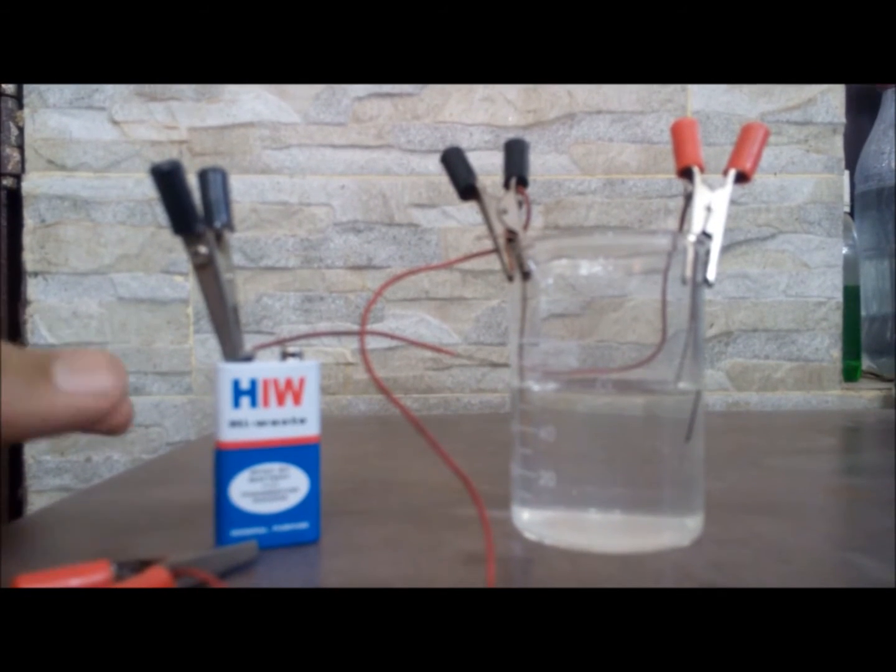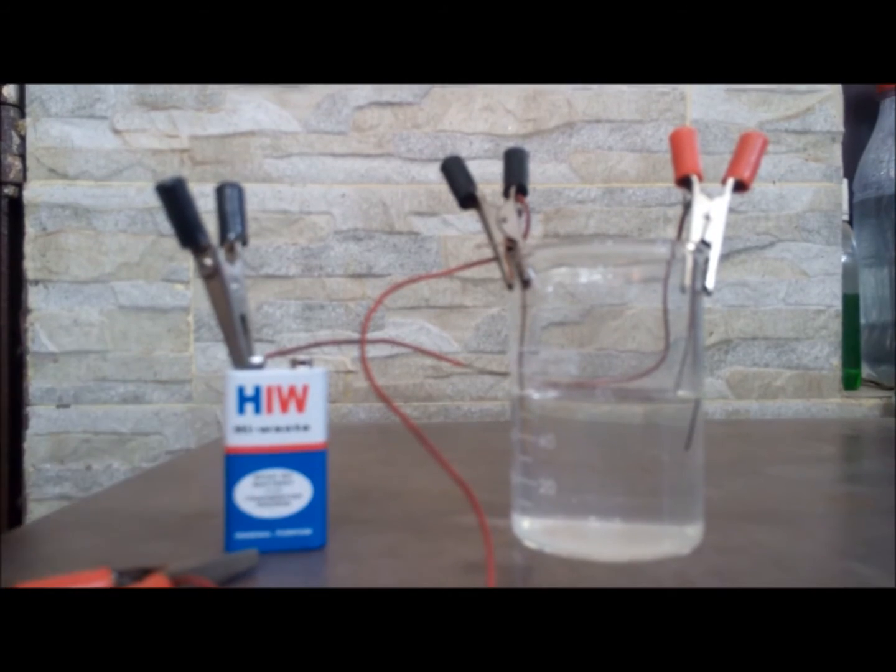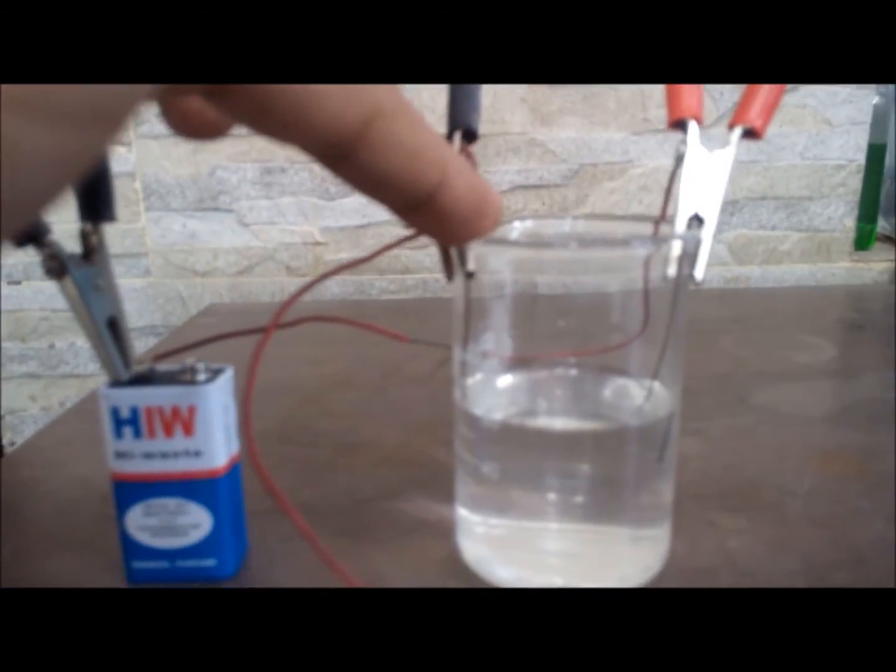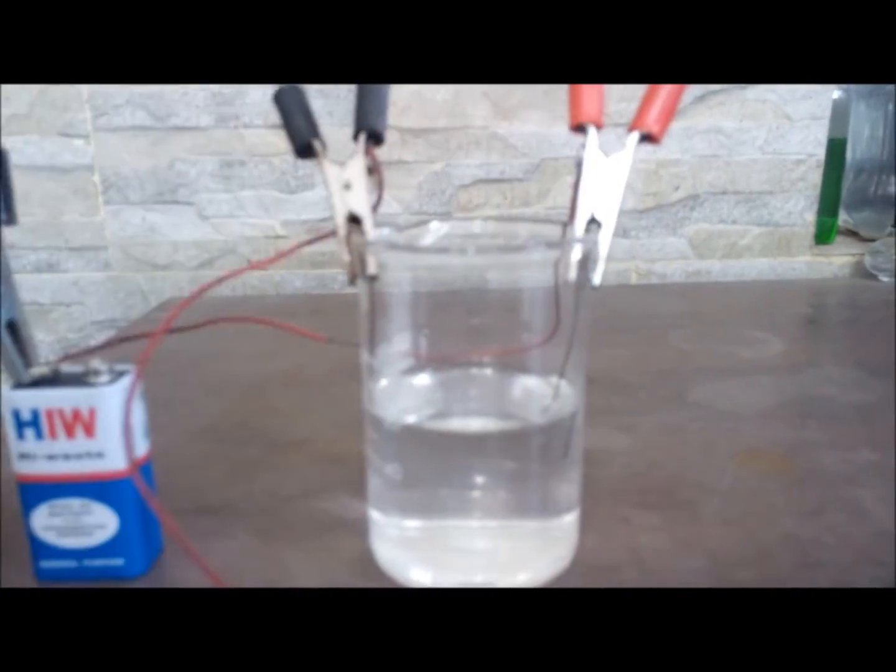In this apparatus I am using a 9 volt battery as you can see, and I have my two electrodes here, two copper electrodes. This one is the anode and here is the cathode.